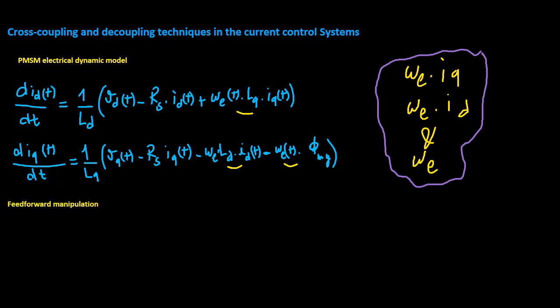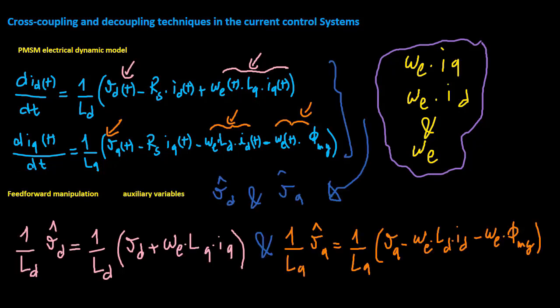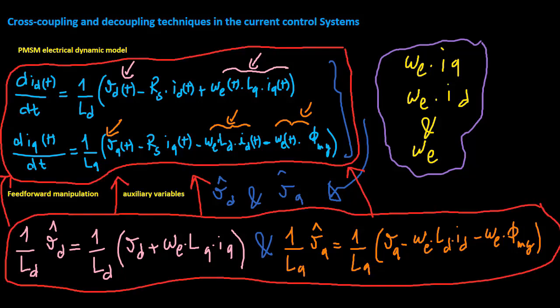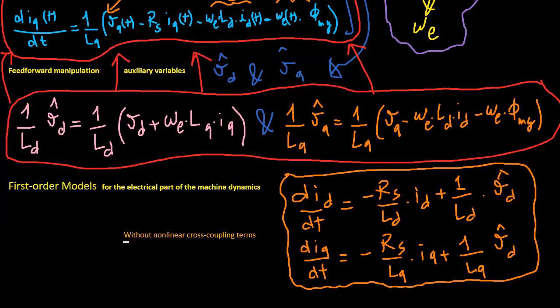The idea is to use auxiliary variables for vd and vq. By inserting these equations into the electrodynamic model, we obtain first order models for the electrical part of the machine dynamics.